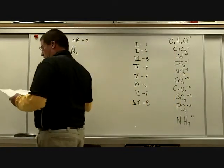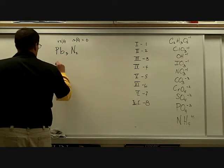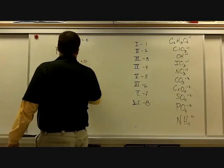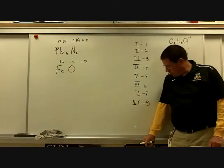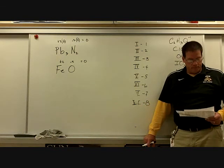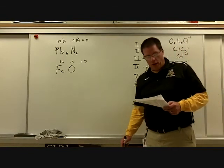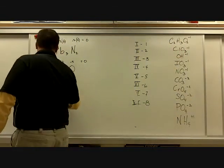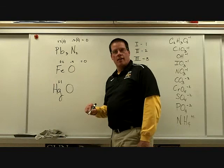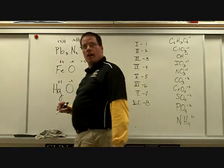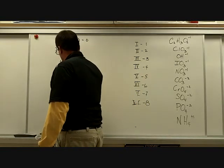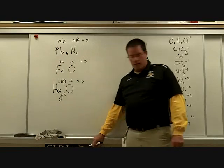Iron(II) oxide — how do we balance that? Done. Then mercury oxide — Hg. You have to put a 2 on the Hg. And that's it — class finished.